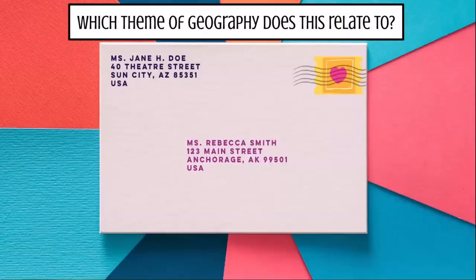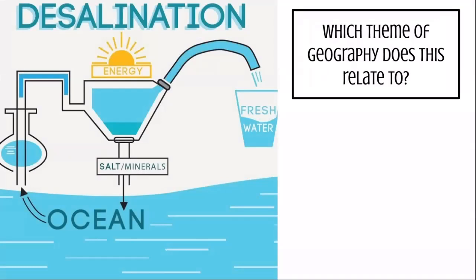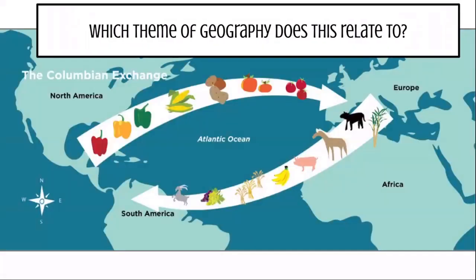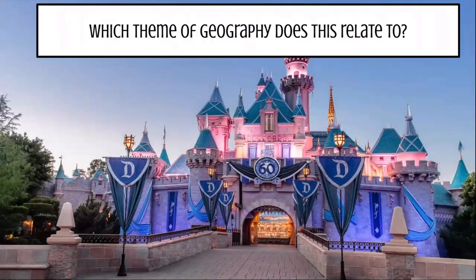Now let's do a quick review — which theme of geography does each example relate to? Think about each one and write down your answer before we go over the answers. We have five examples to consider, one at a time, and we'll review the answers at the end.